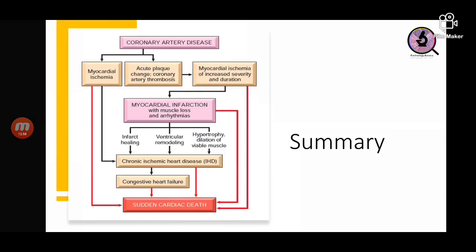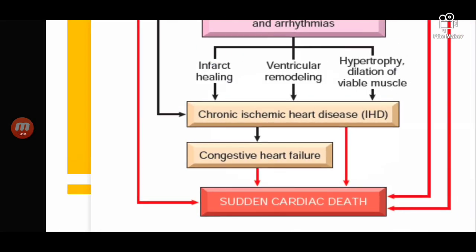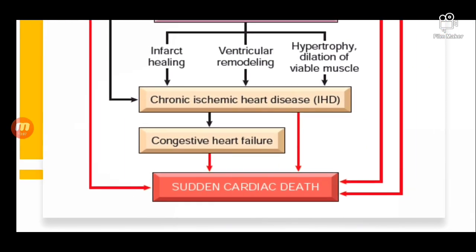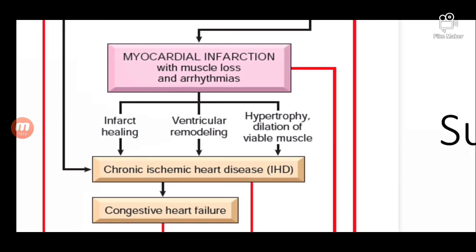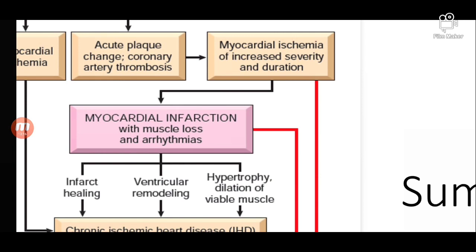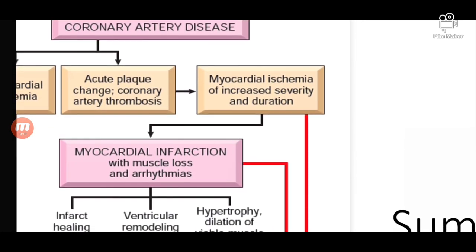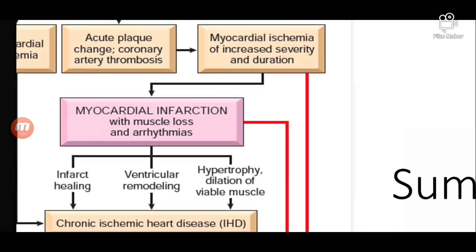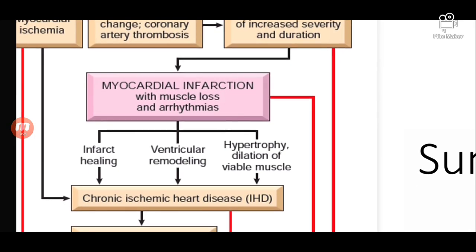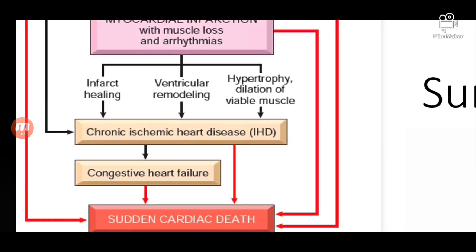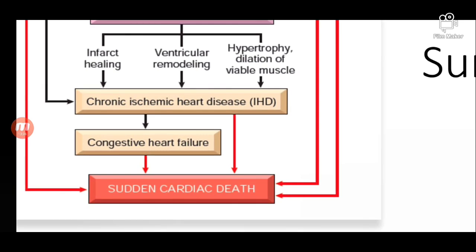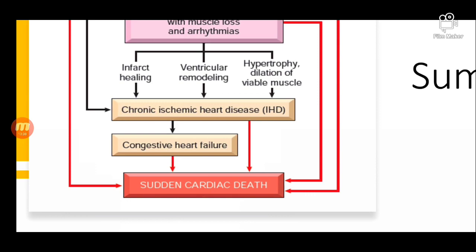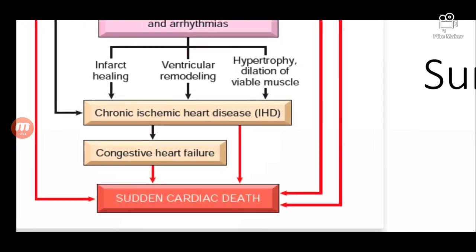As a summary: coronary artery disease leads to myocardial ischemia. Myocardial ischemia may lead to sudden cardiac death if severe, or may convert to chronic ischemic heart disease. There may be acute plaque change leading to myocardial ischemia of increasing severity. Various changes may follow such as healing of the infarct, ventricular remodeling, or hypertrophy of viable muscle. Ultimately this leads to congestive heart failure, and an acute change may lead to sudden cardiac death.